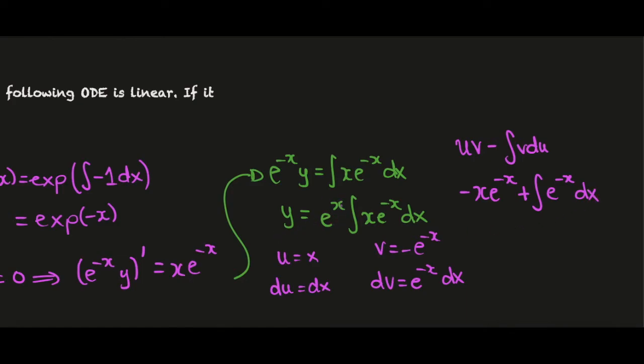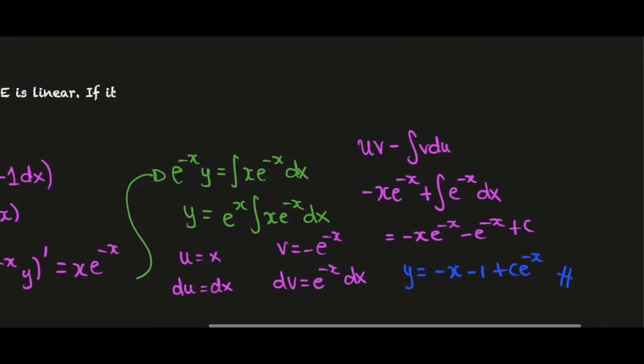Just bear in mind that we need to multiply everything by e to the x, but if we integrate e to the minus x here then that will give us a minus e to the minus x. So this expression becomes minus x e to the minus x minus e to the minus x, and then of course we'll have a constant. We then multiply through by e to the x and that gives us our final answer. So the final answer will be minus x minus 1 plus c e to the x.